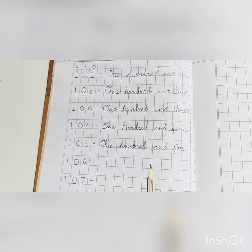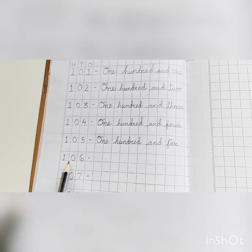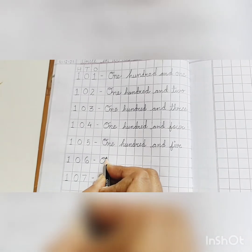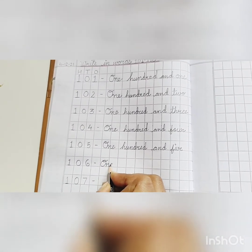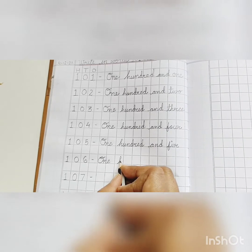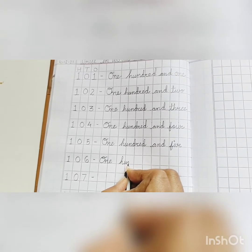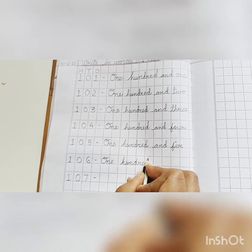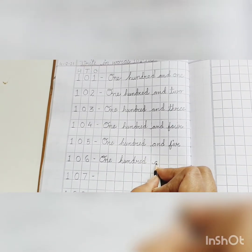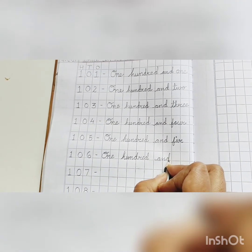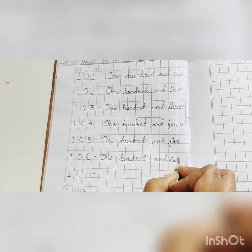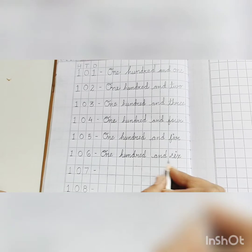Next, 106. O-N-E, 1, H-U-N-D-R-E-D, 100, A-N-D and S-I-X, 6, 106.